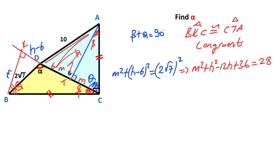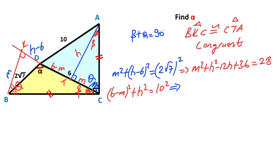Likewise, for this triangle, if we apply the Pythagorean theorem, we get (6 minus m) squared plus h squared equals 10 squared. Therefore, 36 minus 12m plus m squared plus h squared equals 100.